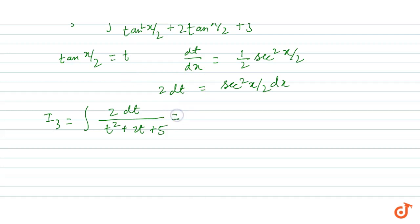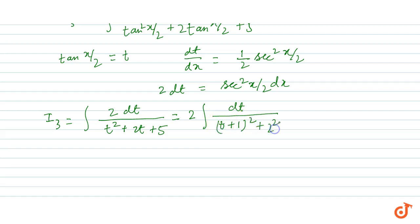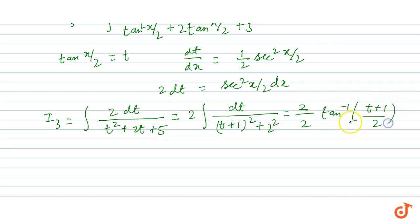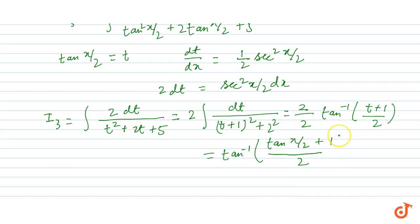Integrating, we get 2 times (1/2) tan⁻¹((t+1)/2), which simplifies to tan⁻¹((t+1)/2). Substituting back t = tan(x/2), I3 = tan⁻¹((tan(x/2) + 1)/2).